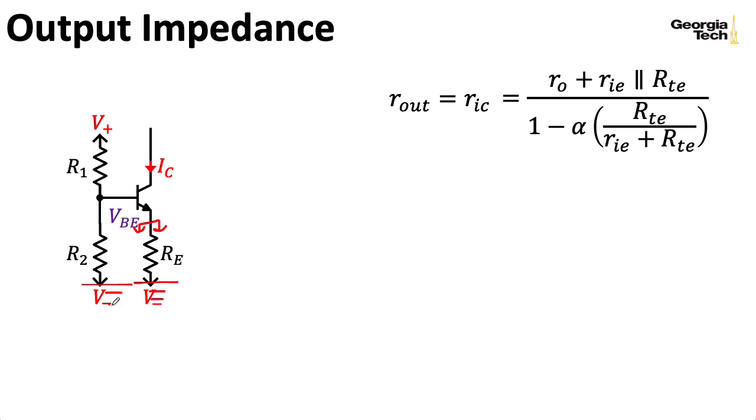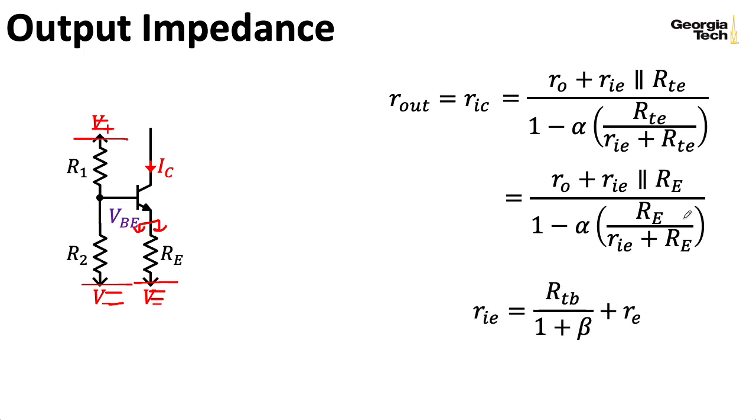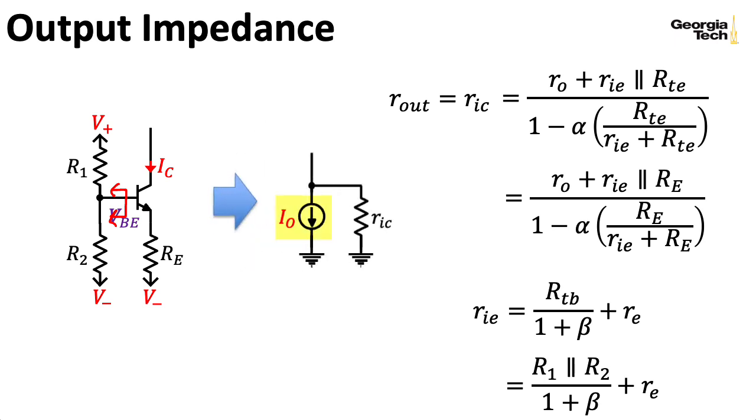Remember, when we're doing a small signal analysis, we will zero out all of our voltage sources. And we could then write this, where I'm just replacing RTE with RE. And RIE has a couple of expressions we could use. It's very natural to use this expression with RE. And for that, we need the Thevenin equivalent looking out of the base, which when I zero the independent sources, it's just R1 in parallel with R2. So RIE is R1 in parallel with R2 over 1 plus beta plus RE. We can then characterize our current source with a Norton equivalent circuit with our current source IO and a parallel resistance little RIC. Now, this output impedance isn't spectacular. You would like it to be higher. And in the next lecture, I'll show you a current source with two BJTs that can give you improved output impedance.